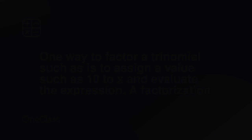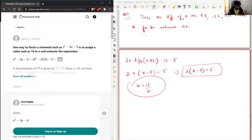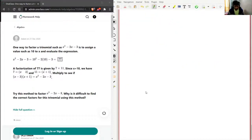And we have question number each. Okay, this is going to be again a little bit lengthier compared to the previous one. So I'll go with blue. One way to factor a trinomial such as x squared minus 2x minus 3 is to assign a value such as 10 to x and evaluate the expression.